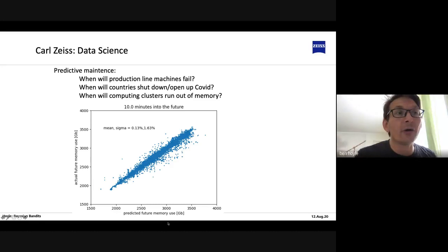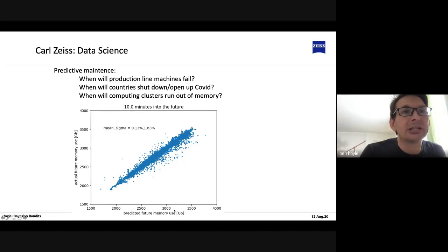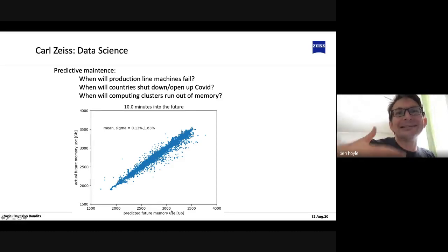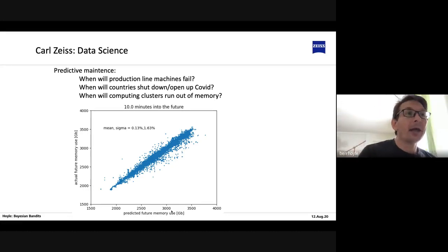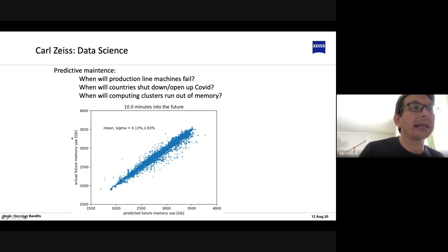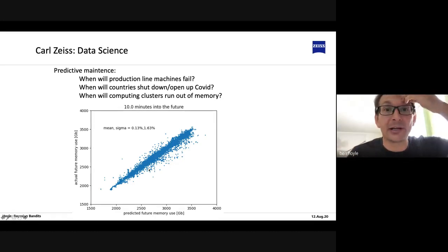One project I was involved in is predicting the memory usage of our computing clusters. We predict what the future memory usage will be — say 10 minutes into the future — which allows us to either upscale or descale the computing cluster and save money. This plot shows predicted memory usage against actual memory usage in gigabytes 10 minutes into the future, and you can see we get very nice results.